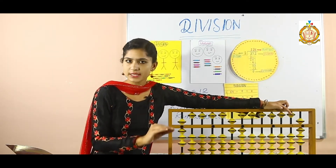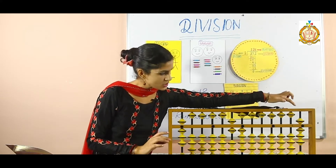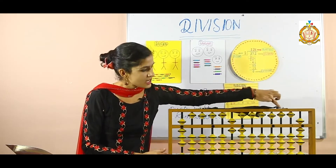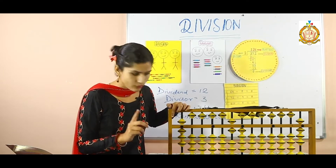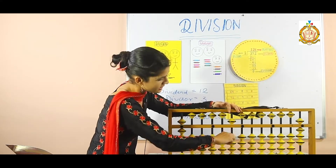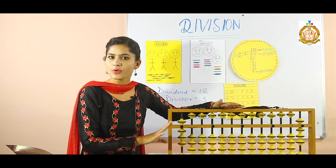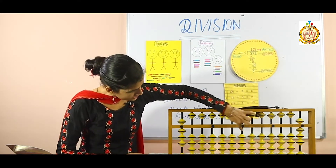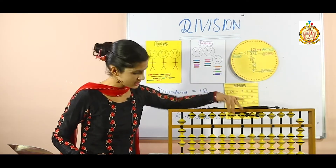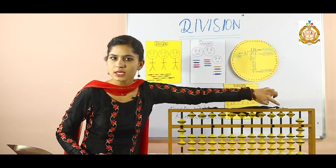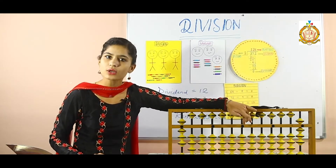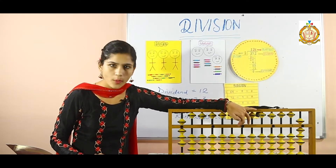Now, to check if any remainder is left, multiply the quotient with the divisor: 8 into 8 is 64. Deduct 64 from the dividend. 64 minus 64 is 0. It means this sum is correct — nothing is remainder here. This indicates divisor, dividend, and quotient. After placing the quotient, multiply quotient into divisor and you will get the remainder on the dividend side.